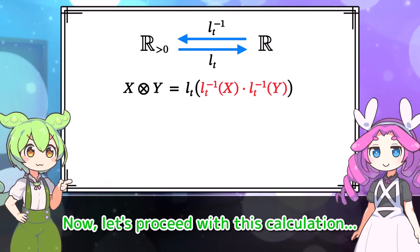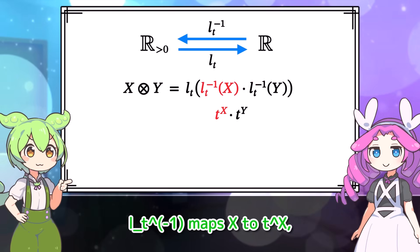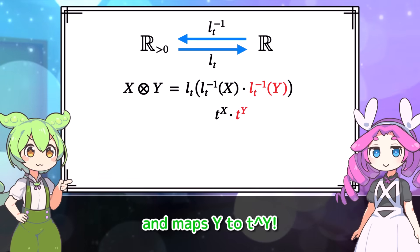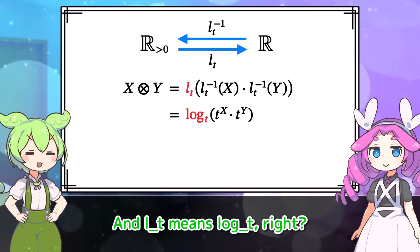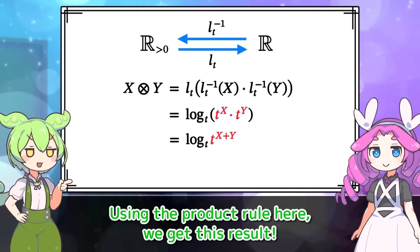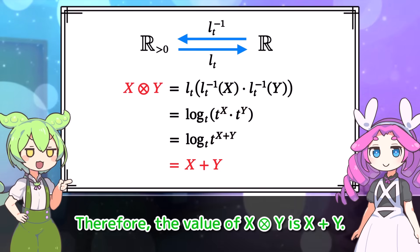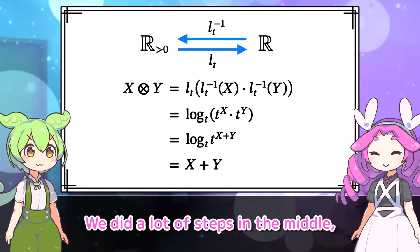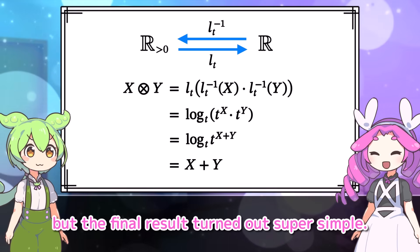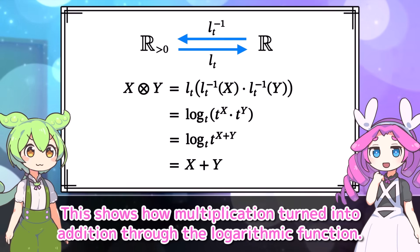Now let's proceed with this calculation. L_t inverse maps x to t to the x, and maps y to t to the y. And L_t means log base t. Using the product rule here, we get this result. Therefore, the value of x ⊗ y is x plus y. We did a lot of steps in the middle, but the final result turned out super simple. This shows how multiplication turned into addition through the logarithmic function.